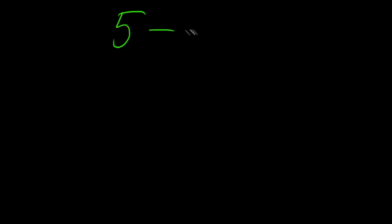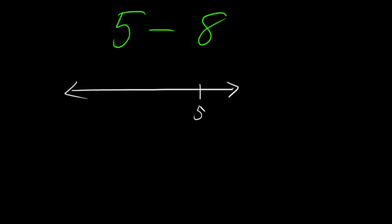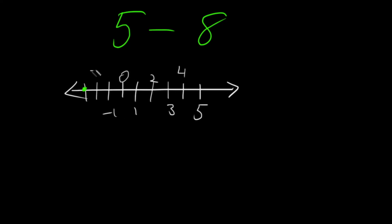Let's try some subtraction problems. Say we have 5 minus 8. We can use the number line again. Starting at 5, and since we're subtracting 8, we go to the left 8 spots — counting 1, 2, 3, 4, 5, 6, 7, 8. Counting down from 5 through 4, 3, 2, 1, 0, negative 1, negative 2, negative 3 — our answer is negative 3.